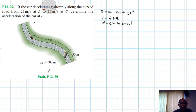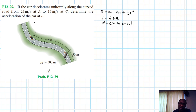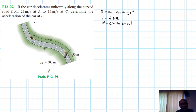Since we have uniform acceleration, we can use these equations. Looking at the curve from A to B to C, the information given is from A to C with constant acceleration. We have the distance, initial velocity, and final velocity, so we can use the equation v² = v₀² + 2a·s.